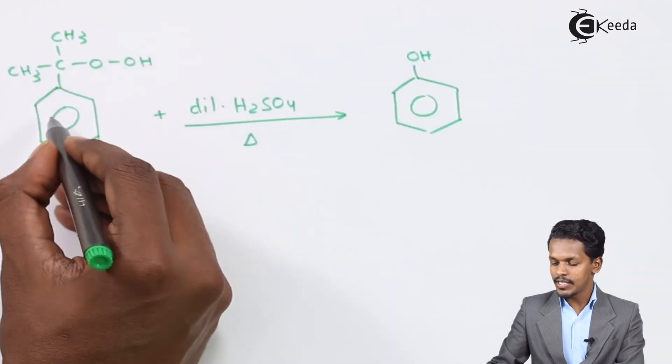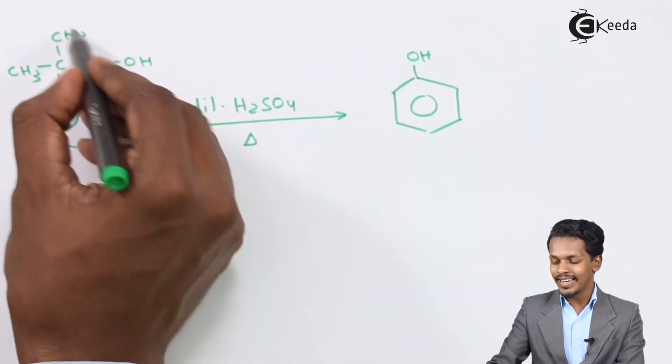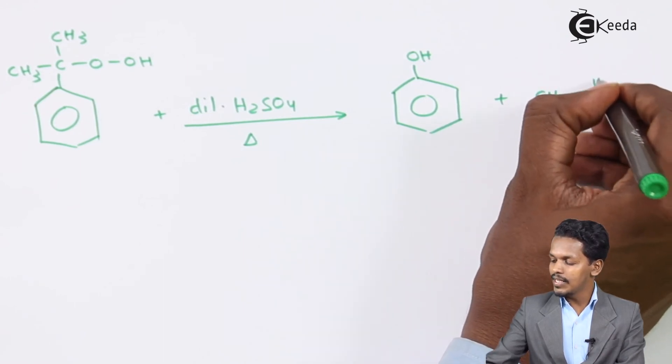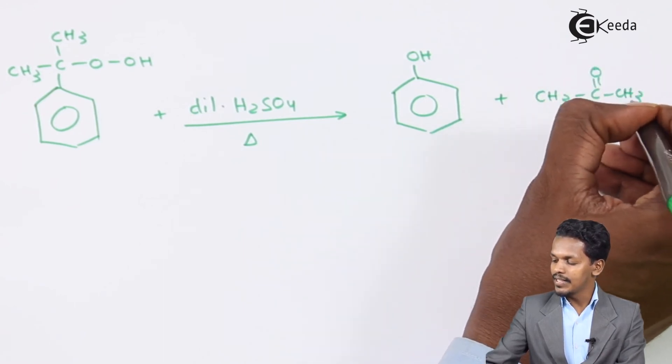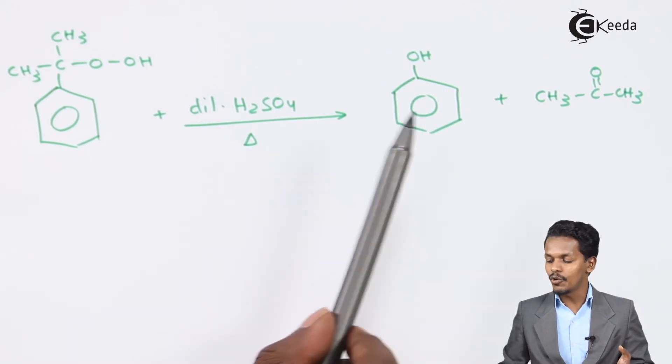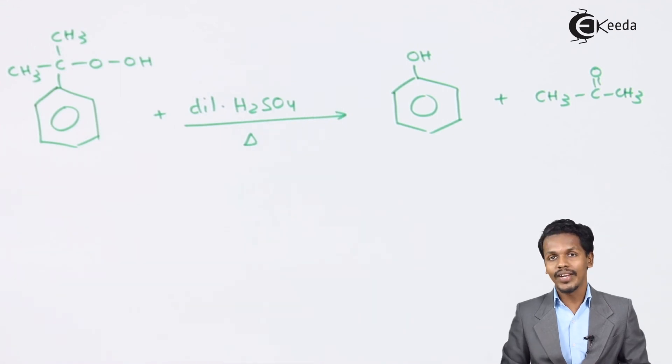The benzene will attach to the OH group while the rest will be removed in the form of a byproduct, CH3-C=O-CH3, which is acetone. This is how we can convert isopropyl benzene into phenol. This is the main thing that we have required.